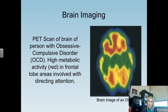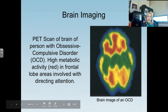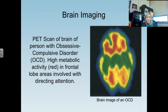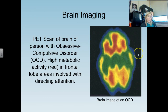Brain imaging of those with OCD shows significant heightened activity on PET scans, particularly in the frontal lobe. People with OCD have very high metabolic activity in the frontal lobe — specifically the prefrontal cortex — which is involved in focusing attention. This explains why those with OCD have this heavily focused attention on the items that evoke anxiety and stress, demonstrating a clear biological component to the disorder.